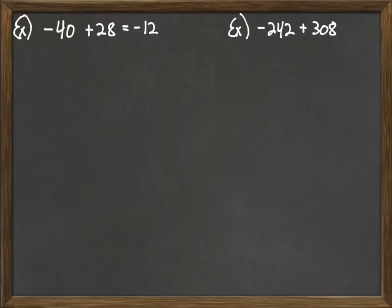Consider this next example, negative 242 plus a positive 308. Once again, we're going to do the difference. This time we're going to write it out. 308 minus 242. And so we subtract. 8 minus 2 is 6. We'd have to borrow. So we do 10 minus 4 is 6. And then 3, because we borrowed, would now be a 2. And 2 minus 2 is 0. And so we get 66. And now because the positive number was bigger, the answer is positive 66.